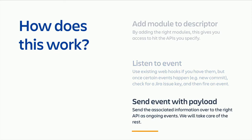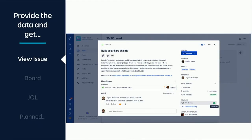The third part is you need to send an event with the payload. The payload is a JSON blob — everyone's familiar with that. We just have a structured JSON format you send in, and it's very small. Once it's sent in, Jira will take care of the rest.